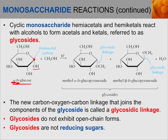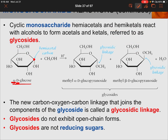Right now we have a hemiacetal molecule because we have an OR group and an OH group. If we turn that OH group into an OR group, it would become an acetal. We react it with an alcohol, so the OH group here reacts with the alcohol and we replace that OH with OCH₃. The OH we had before reacts with the hydrogen from the alcohol to create water.